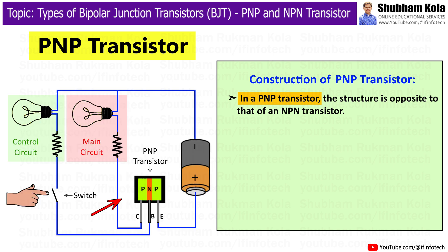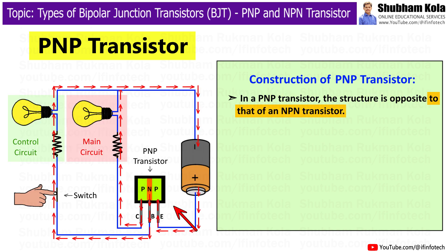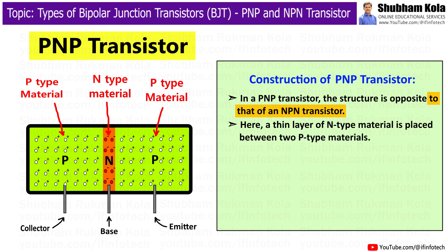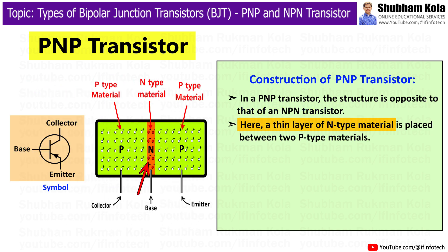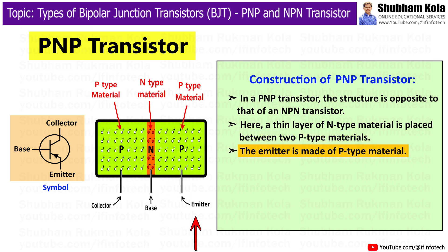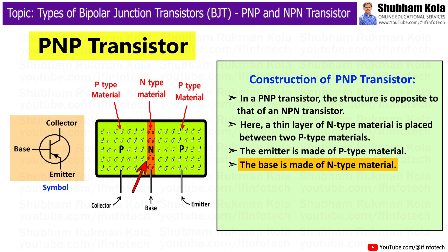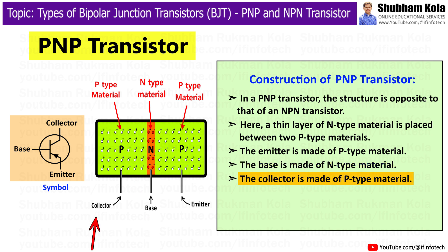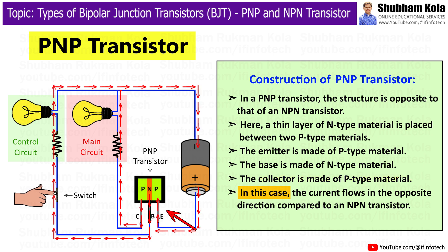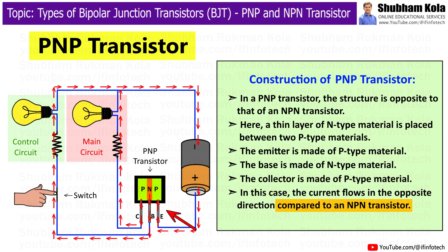In a PNP transistor, the structure is opposite to that of the NPN transistor. A thin layer of N-type material is placed between two P-type materials. The emitter is made of P-type material, the base is made of N-type material, and the collector is made of P-type material. In this case, the current flows in the opposite direction compared to the NPN transistor.